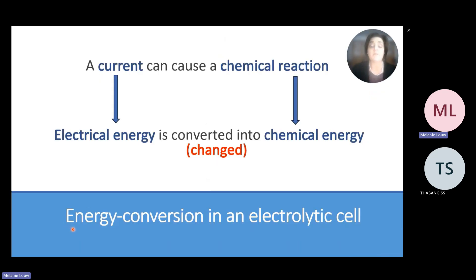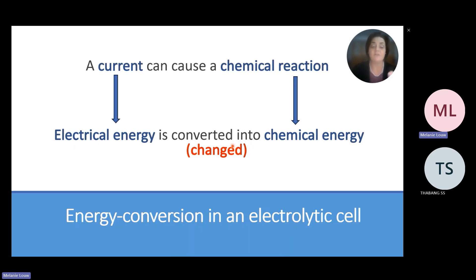The next thing you must know about the electrolytic cell is the energy conversion that takes place. A current can cause a chemical reaction. The battery provides electrical energy, which is conducted into the electrolyte, and in the solution a chemical reaction takes place releasing chemical energy. So the electrical energy is converted into chemical energy. The electrolytic cell basically changes electrical energy into chemical energy — the word to use here is 'converted'.